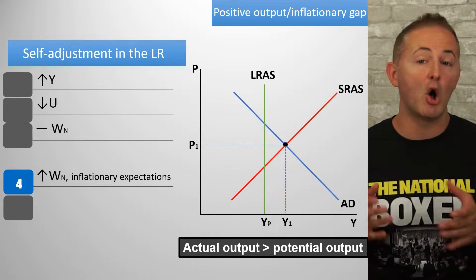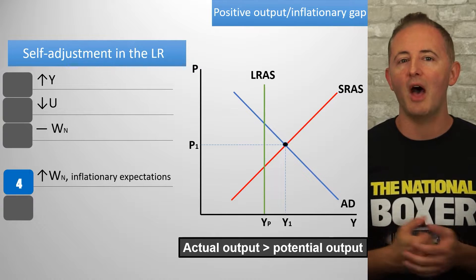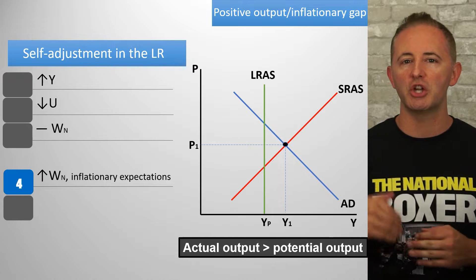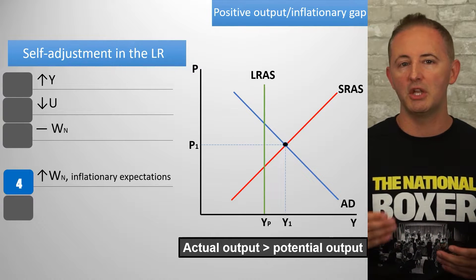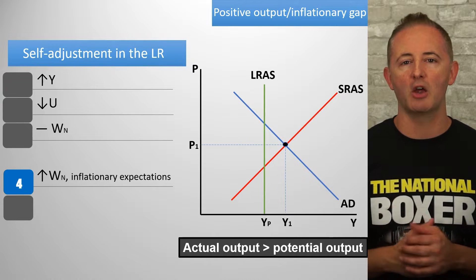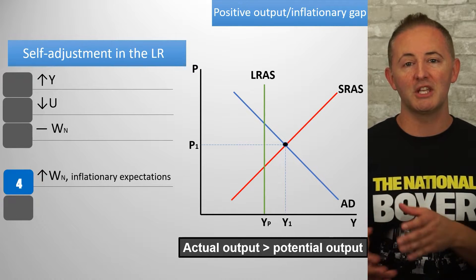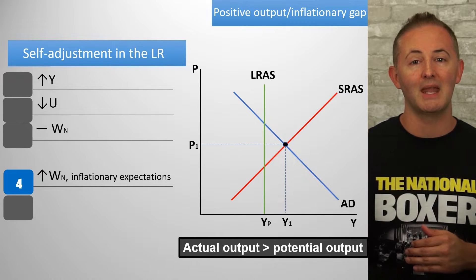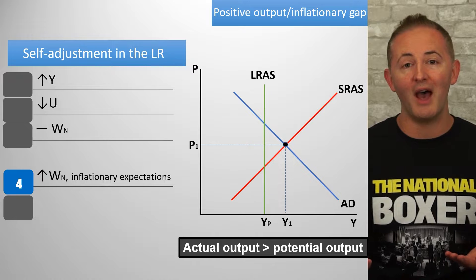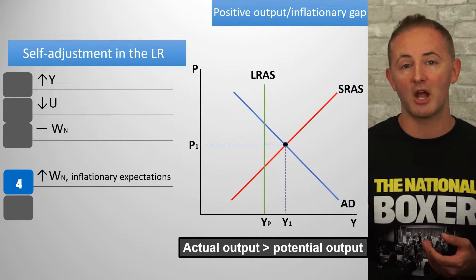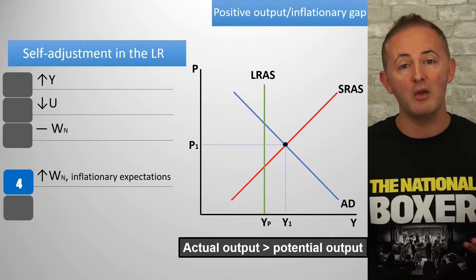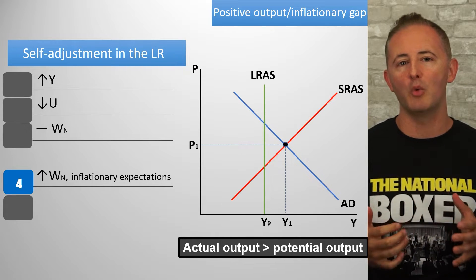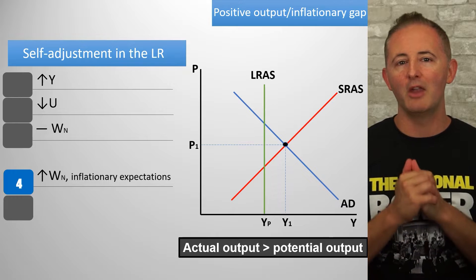Businesses also expect the same inflation, so they're willing to pay the higher wages — at least in part because they expect to charge higher prices for their products. And with competition for workers, they have to pay higher wages to keep their workers. For example, if inflation has been 10% for a couple of years, workers will demand a 10% increase in nominal wages, which businesses will provide because they expect prices to rise by 10%. So nominal wages increase in the long run.